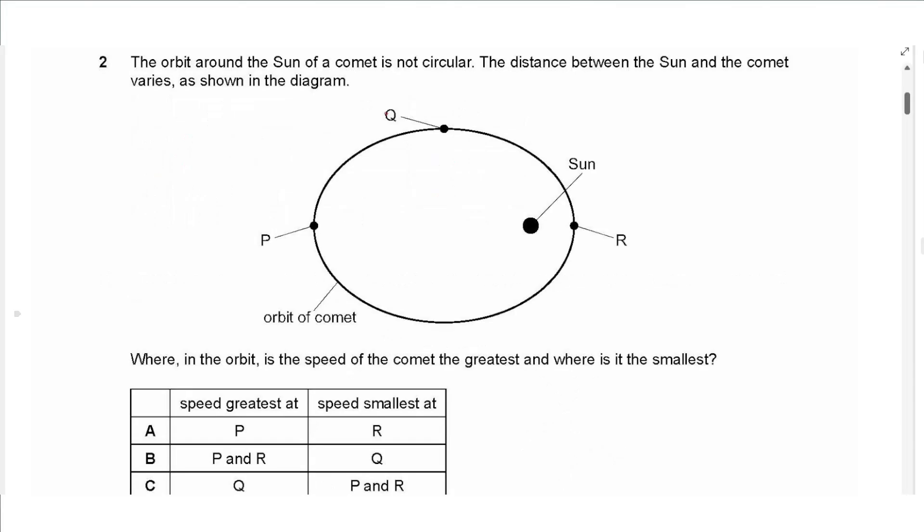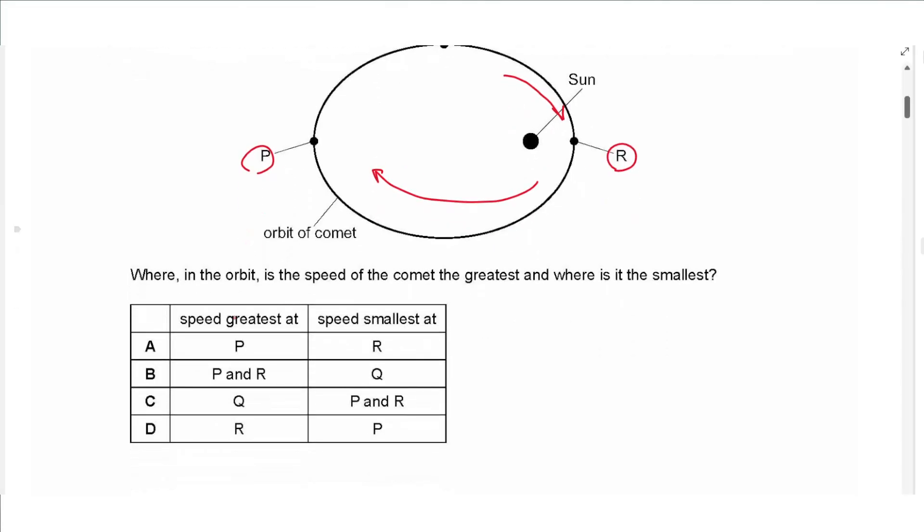The second question says, the orbit around the sun of a comet is not circular. The distance between the sun and the comet varies as shown in the diagram. Where in the orbit is the speed of the comet the greatest and where is it the smallest? The comet speeds up as it gets closer to the sun and slows down as it goes away from the sun. So highest speed is at R and lowest speed is at P. The answer is D.